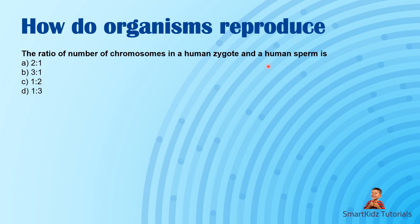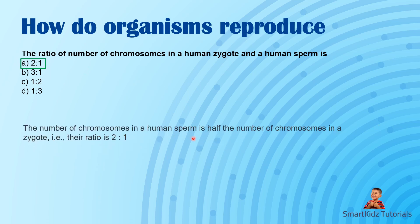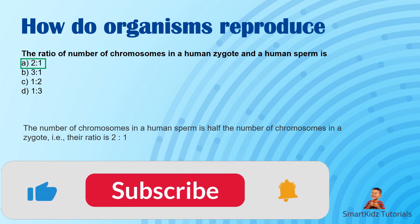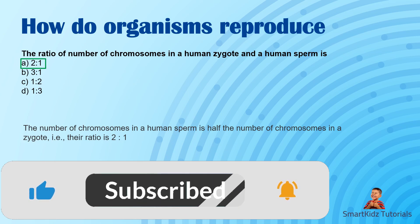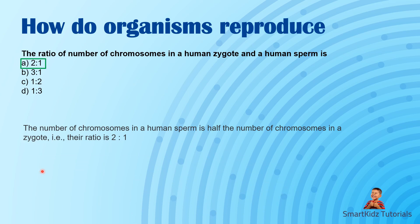The ratio of number of chromosomes in a human zygote and a human sperm is 2:1. The number of chromosomes in a human sperm is always half the number in a zygote, because a zygote is formed by fusion of a sperm and an egg. The sperm contains the haploid set — one set from the father — and the egg contains one set from the mother. In humans we have 23 pairs; the zygote has 46 total, while sperm has 23 and egg has 23.